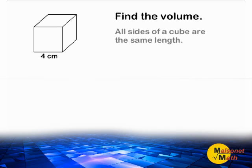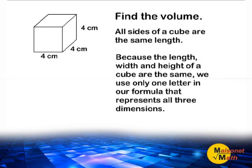When finding the volume of any cube, we should understand that all sides of a cube are exactly the same length. Because the length, width, and height of a cube are the same, we use only one letter in our formula that represents all three dimensions.